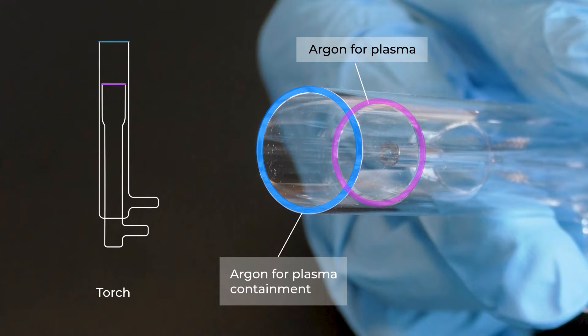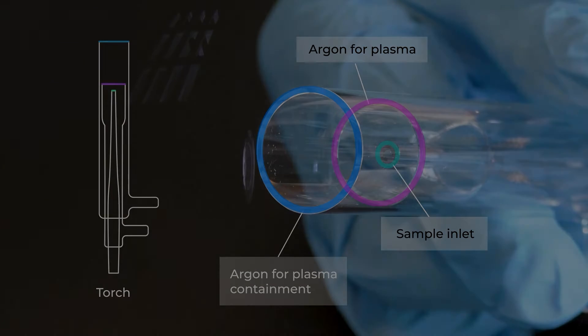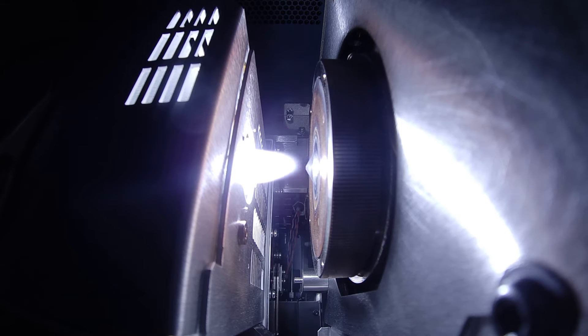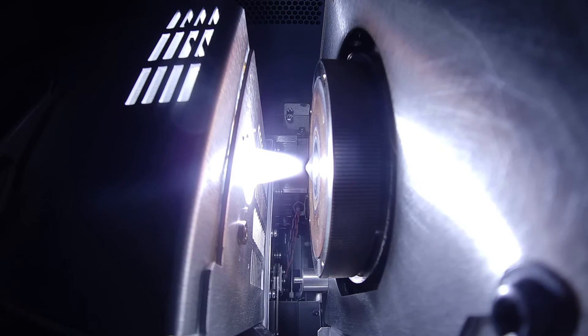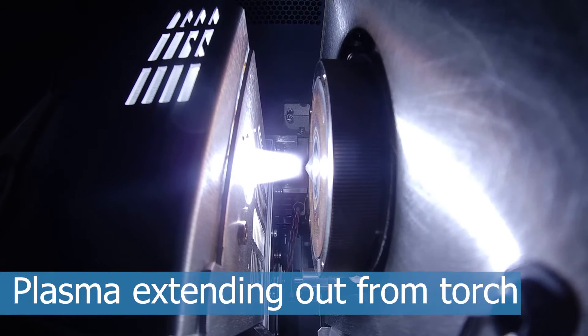The middle cylinder supplies the argon gas that forms the plasma, and the inner cylinder injects the sample aerosol into the plasma. An initial spark ionizes the argon, and the resulting free electrons and argon cations are accelerated by the oscillating RF field.